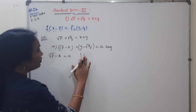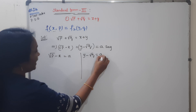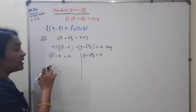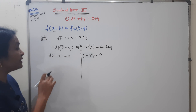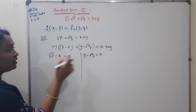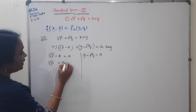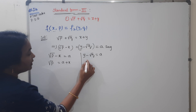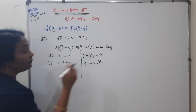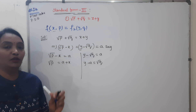You will get two parts: root P minus X equals A, and root Y minus root Q equals A. Write the function in terms of X and A — P value will be found. Root P equals A plus X. Y minus A equals root Q. We will find root P and Q values.